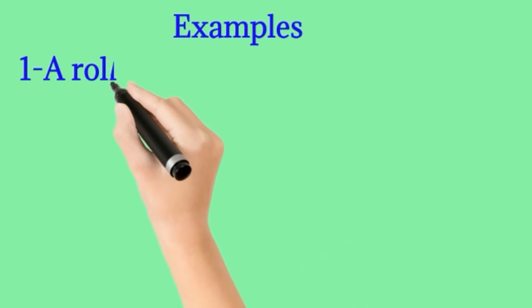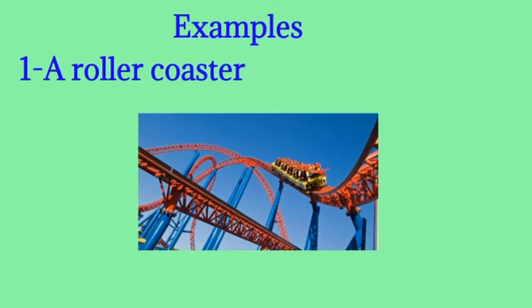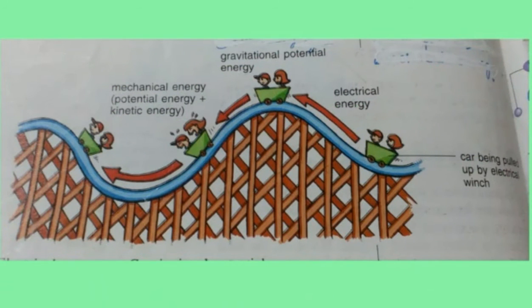Let's discuss it with the help of examples. The first example is a roller coaster. This diagram shows a roller coaster. In this diagram you can see cars on a roller coaster are pulled up high using an electrical winch. The electrical energy used by the winch is transferred and changed into the gravitational potential energy possessed by the cars and their passengers.